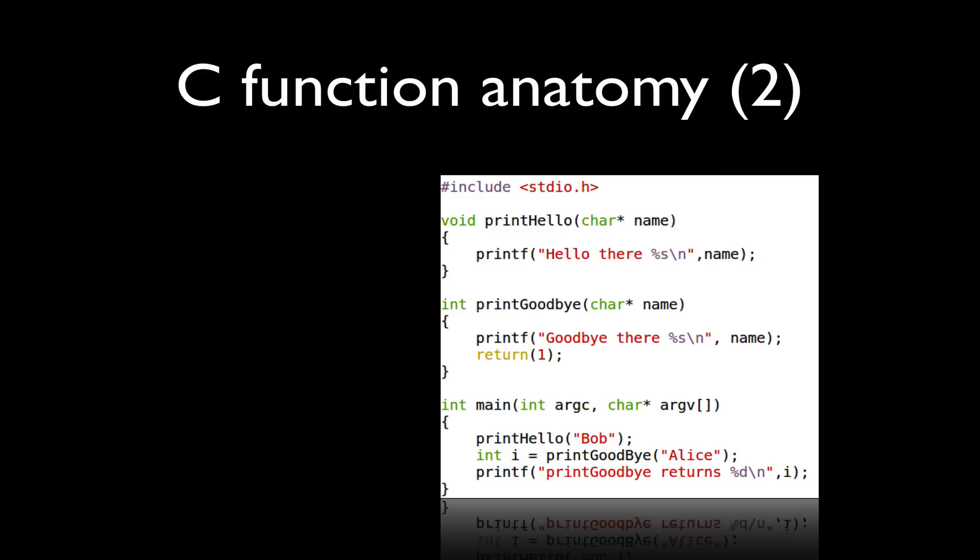Here's an example of a void function where the compiler assumes an implicit return statement. So you'll notice my function print_hello returns void, and my function itself does not have a return statement. So the compiler here is assuming an implicit return.